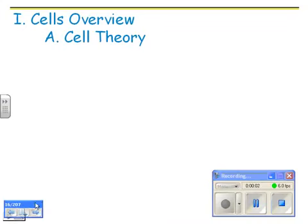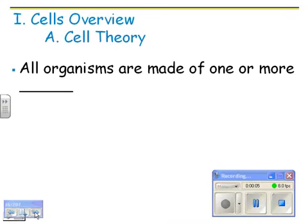Cell overview. We're going to talk about cell theory to start. All organisms are made of one or more cells — your dog, your cat, you, your goldfish, your oak tree, the grass, the worms out there, the bacteria under your fingernails — all of them are made out of cells. The only kind of wacky one are viruses; they are not alive and they're not made out of cells, though they do have some characteristics of life.